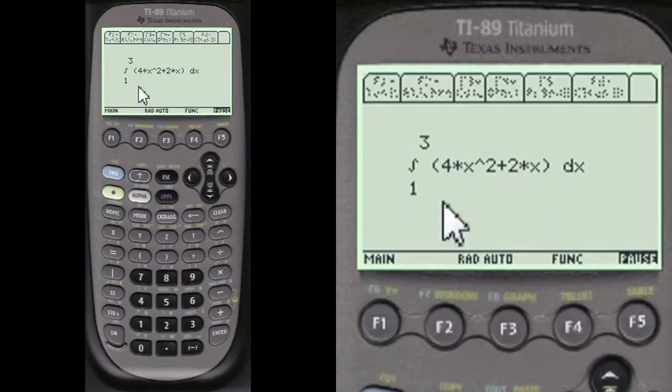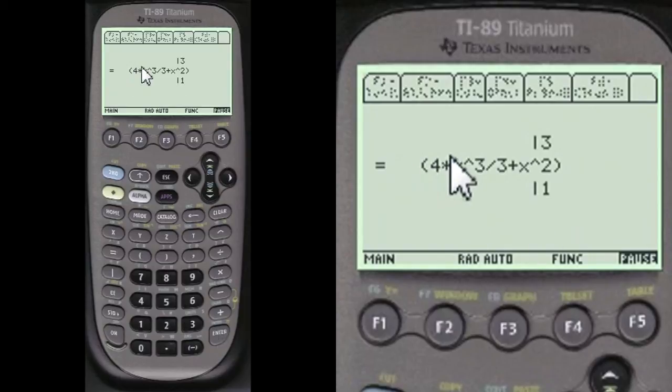Now we integrate that with respect to the limits of 1 and 3. Here's with respect to x. So we integrate that. Here's the answer here, 4x cubed divided by 3 plus x squared over 1 and 3, the limits.